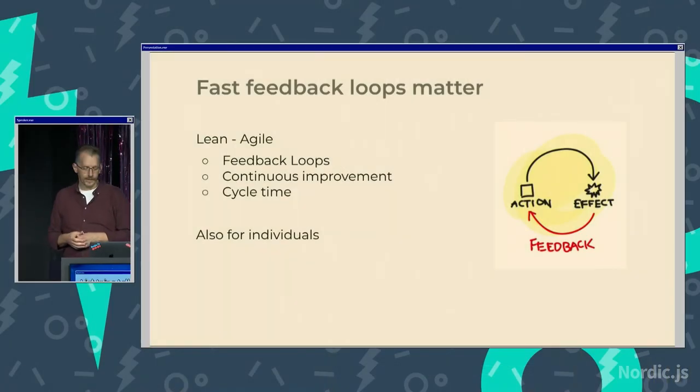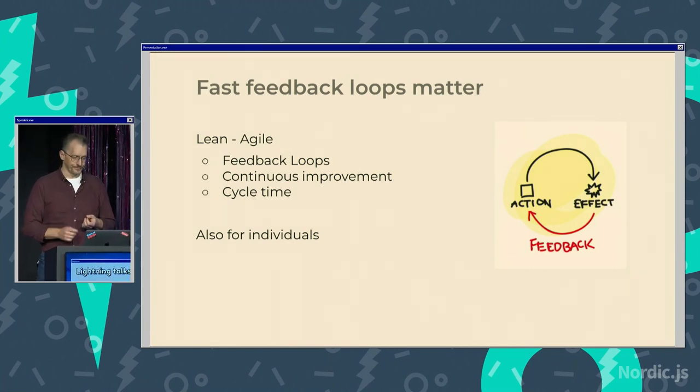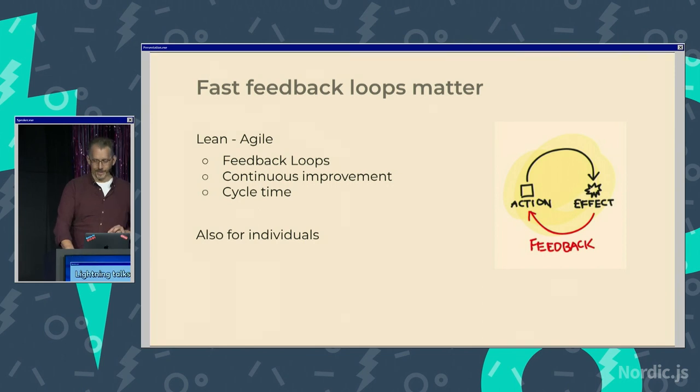Lean and Agile has taught us a lot about how to work in high-performing teams and organizations. It teaches us the value of feedback loops, continuous improvement, and having fast cycle times. But you can apply the same way of thinking to your individual productivity as well, to get quick feedback and continuously learn.